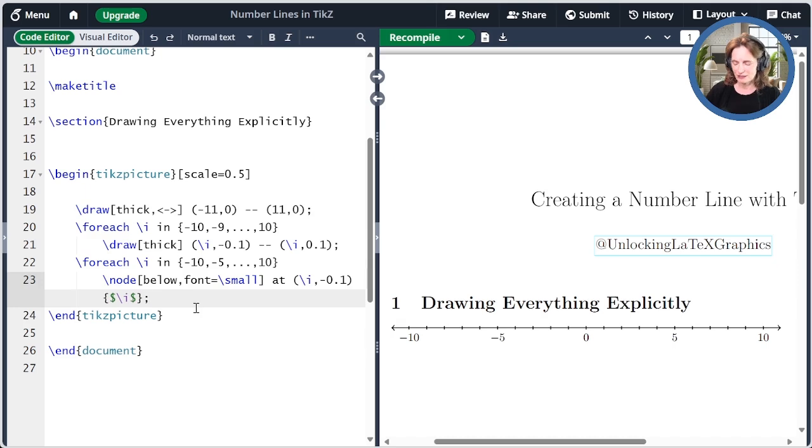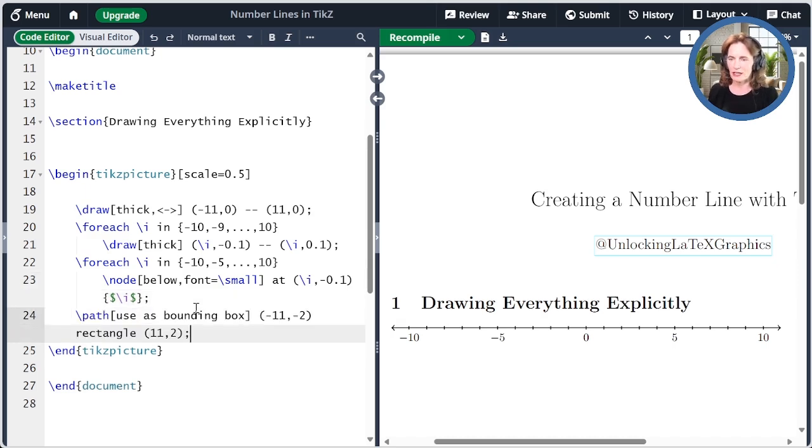I'll include a link to my bounding boxes episode in the show notes. Meanwhile, here's the code to create this. So I'm drawing a rectangle from minus 11, 2 to 11, 2. And now that invisible rectangle is around this box and enlarges the canvas.